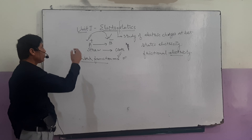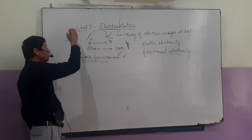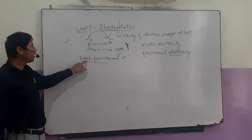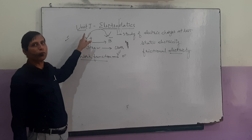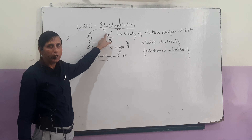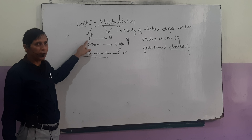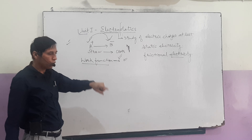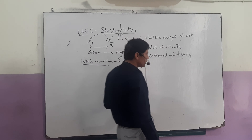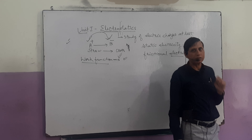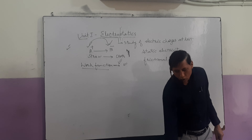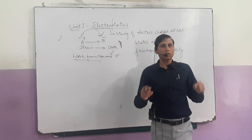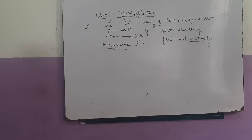Just like chalk is transferred onto a board due to friction, this is the reason why electrons are transferred from one body to another body, and both bodies are said to be electrified or charged. Moreover, this experiment shows that there are two types of charges — the charged straw attracts small bits of paper, and two charged straws repel each other.